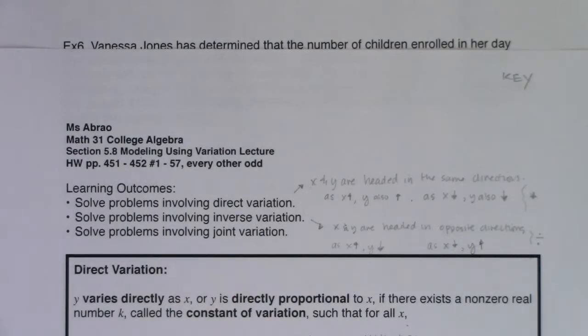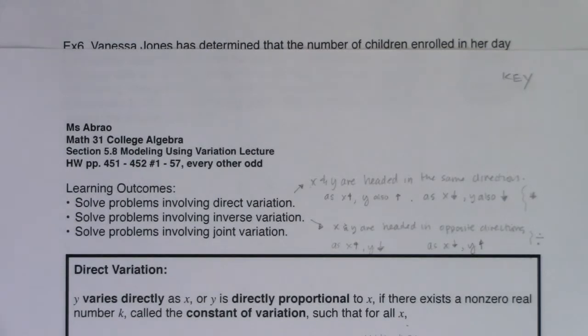That rounds out section 5.8. At this point, I hope we're more comfortable solving direct variation, inverse variation, and combining them into joint variation. This section also wraps up chapter 5 — polynomial and rational functions — and we're heading into logarithmic and exponential functions. Thanks so much, gang. Bye!